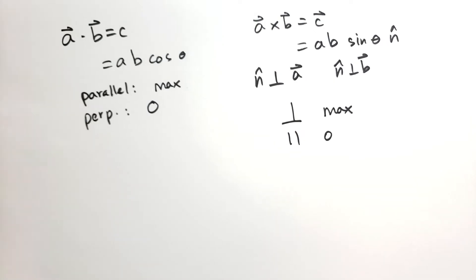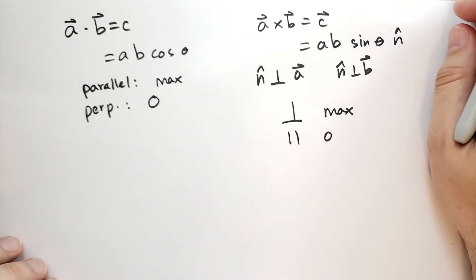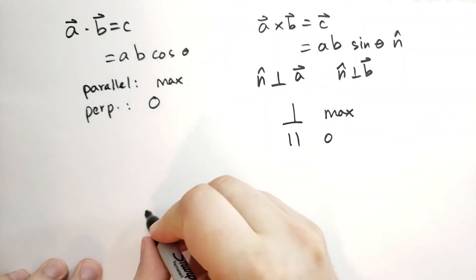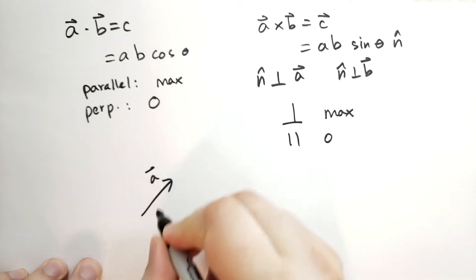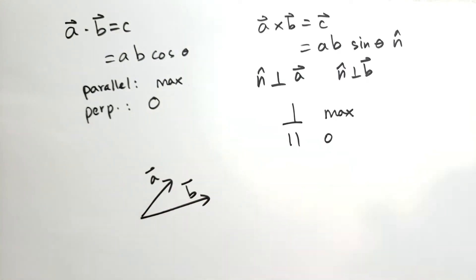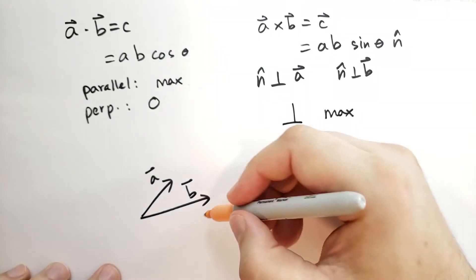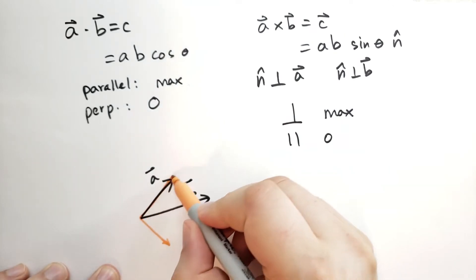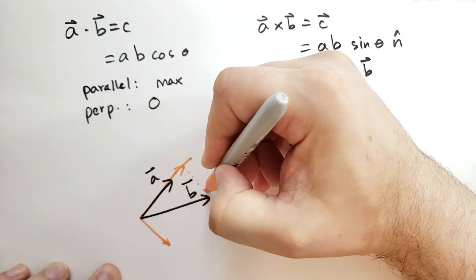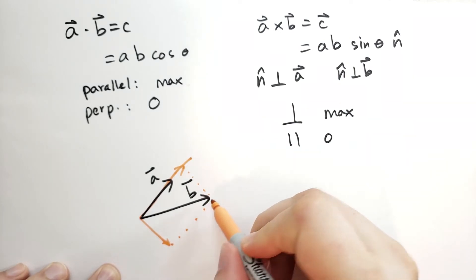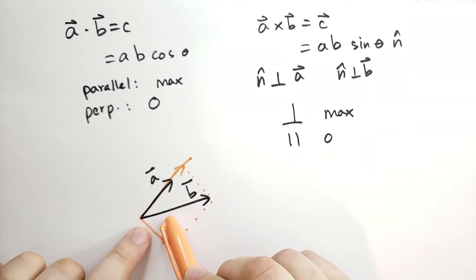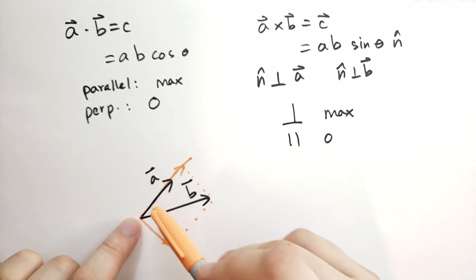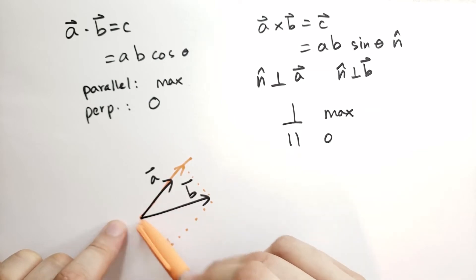A lot of ink has been spilled and a lot of breath has been wasted talking about the physical interpretation of the dot and cross products. When I see A cross B or A dot B, I separate the two vectors into their normal and parallel components. The B vector has a perpendicular component and a parallel component. A dot B is really A dot the parallel component of B, and A cross B is A cross the perpendicular component of B.